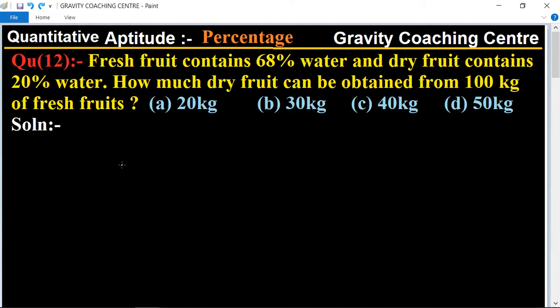Fresh fruit contains 68% water and dry fruit contains 20% water. How much dry fruit can be obtained from 100 kg of fresh fruit?